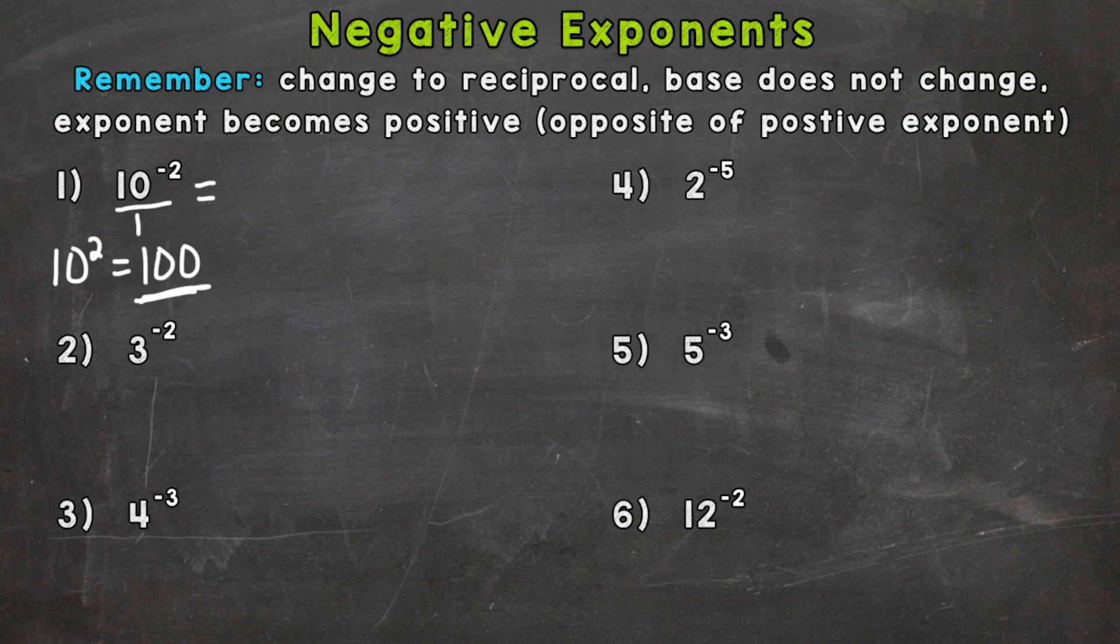We're going to take the reciprocal, so we're going to flip this. Our negative 2 tells us we need to do this. So now we have a numerator of 1, our base of 10 stays the same, and our exponent of negative 2 is now positive once it's changed to this reciprocal.